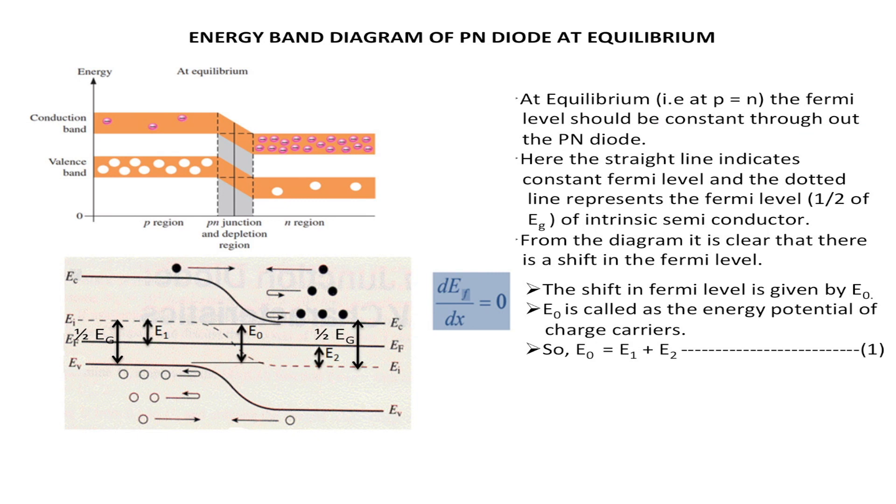Towards the P type material, we can consider the shift in the energy level given by E1. And towards the N type material, the shift in the energy level is given by E2. So when we want to find out this energy potential of any charge carrier, we can say E0 is equivalent to E1 plus E2. Under stable condition, I want the Fermi level of this energy band diagram to be a constant. Fermi level is the maximum energy occupied by any charge carrier under 0 Kelvin. So under thermal equilibrium, we want to make this Fermi level a constant line, and to overcome this, we are finding out E0 equal to E1 plus E2.